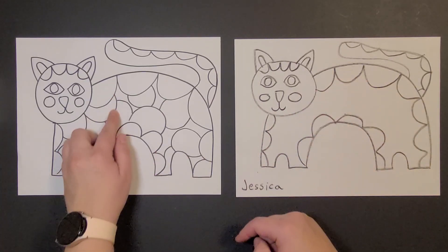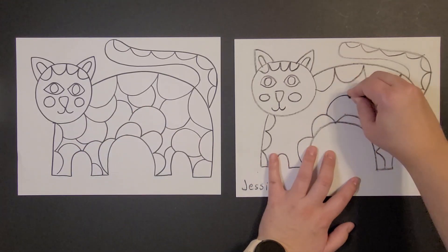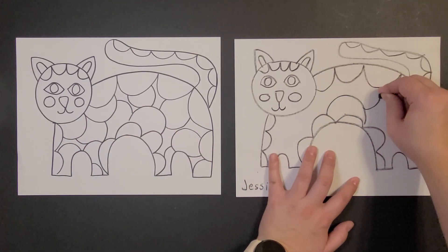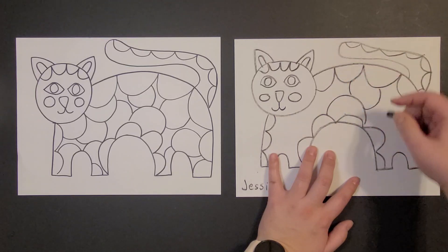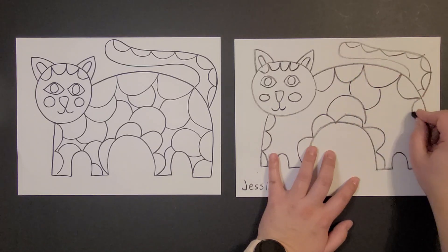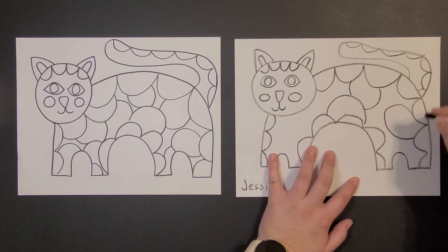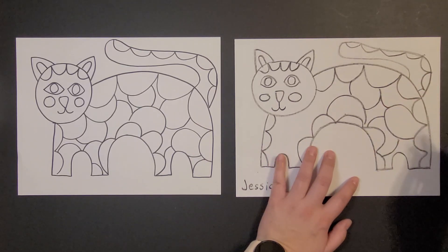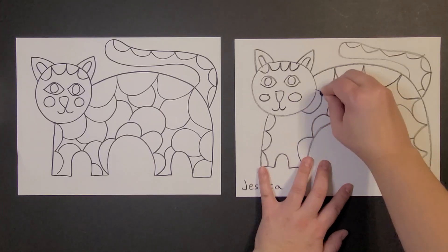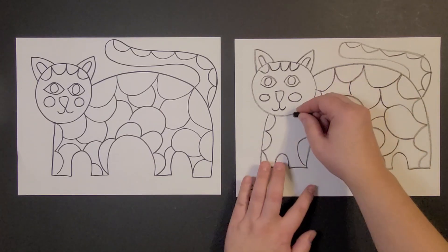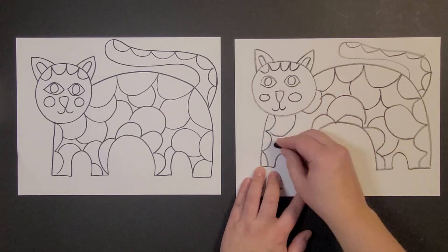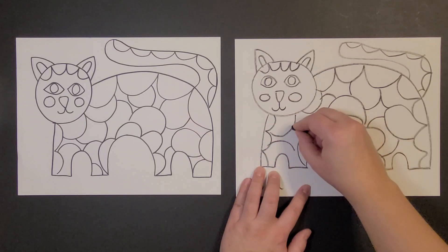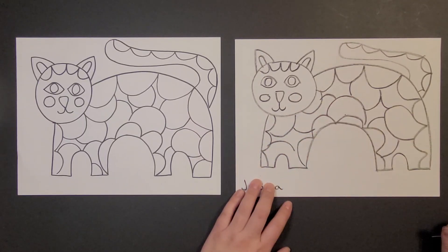And then I have these going lots of different directions. So I'm gonna do big chunks and little chunks. Do one right there like that. And one like this. Okay. There's my kitty cat.